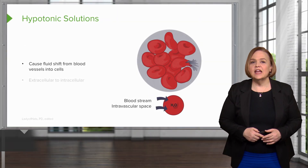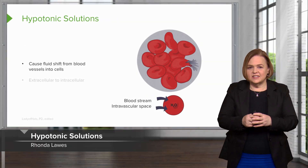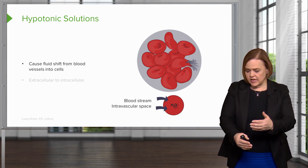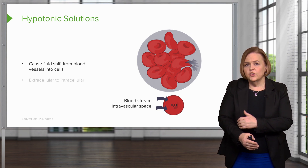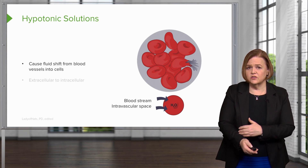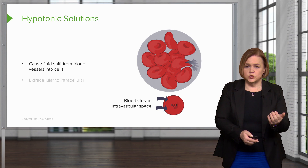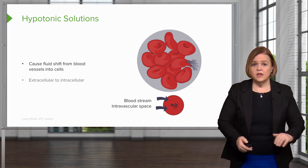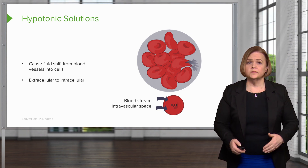Now let's look at hypotonic solutions. Look at that cell — it is swelling. When I hang a hypotonic solution into my bloodstream, the cell is now more concentrated, so fluid is going to shift into the cell, from the vessels into the cell. You can see the fluid shifting into the cell — it's going from extracellular to intracellular.